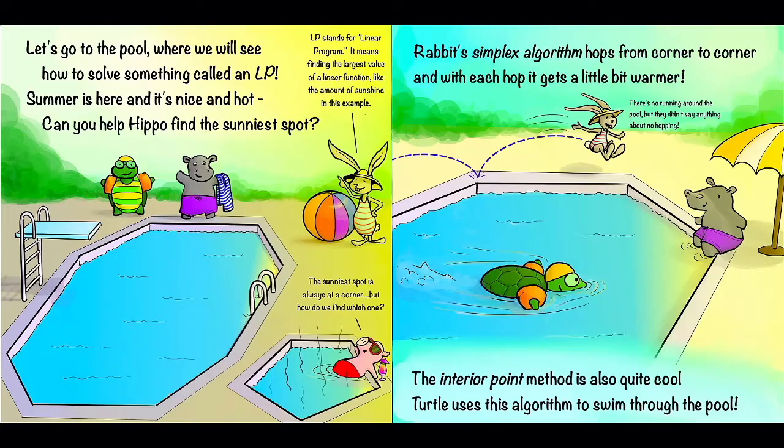For our next sort of algorithm, let's go to the pool where we will see how to solve something called an LP. LP stands for linear programming. Summer is here and it's nice and hot. Can you help Hippo find the sunniest spot? So here we have Turtle and Hippo at the pool. We have this kind of funny-shaped polygon pool, and we can see that the sun is coming from this side, so it puts kind of a gradient on the pool. Rabbit tells us that LP stands for linear program, and it means finding the largest value of a linear function, like the amount of sunshine in this example.